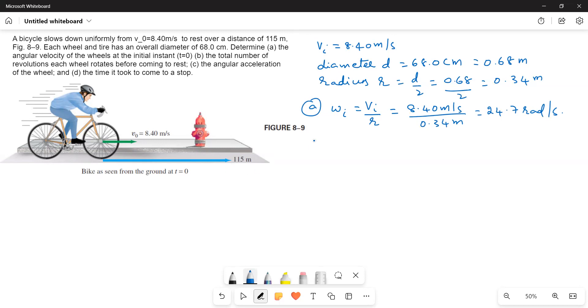We have to find one revolution, which equals 2πr = 2π × 0.34 = 2.136 m. So one full circle means it covers a linear distance of 2.136 m, which equals one revolution or one full circle.